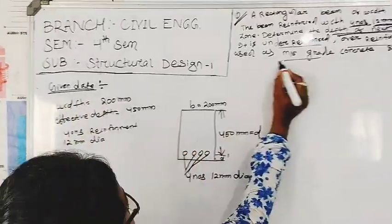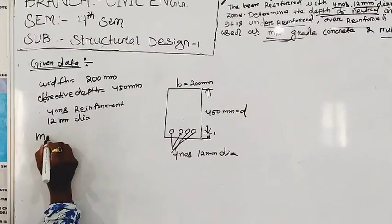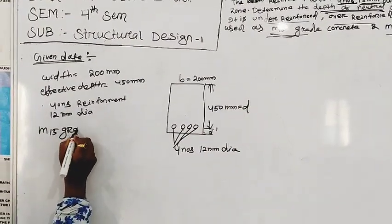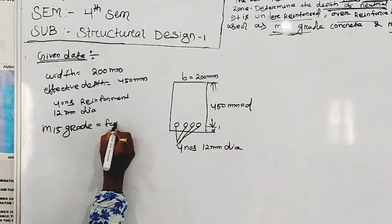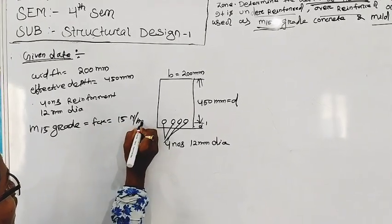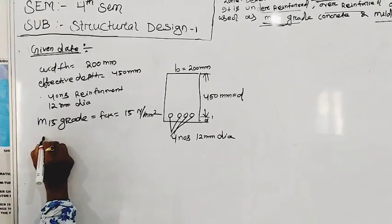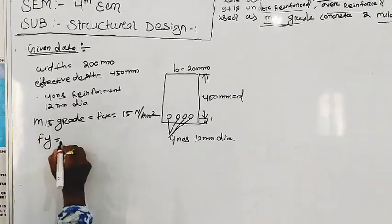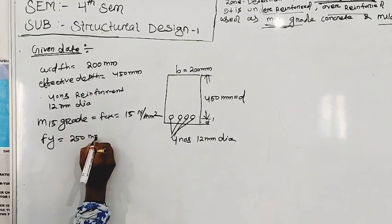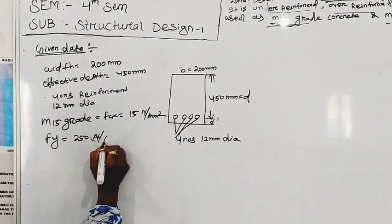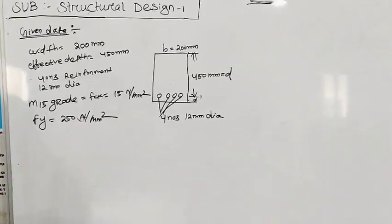Concrete: M15 grade concrete. That is, FCK equal to 15 N per mm square. Given mild steel, FY equals 250 N per mm square.